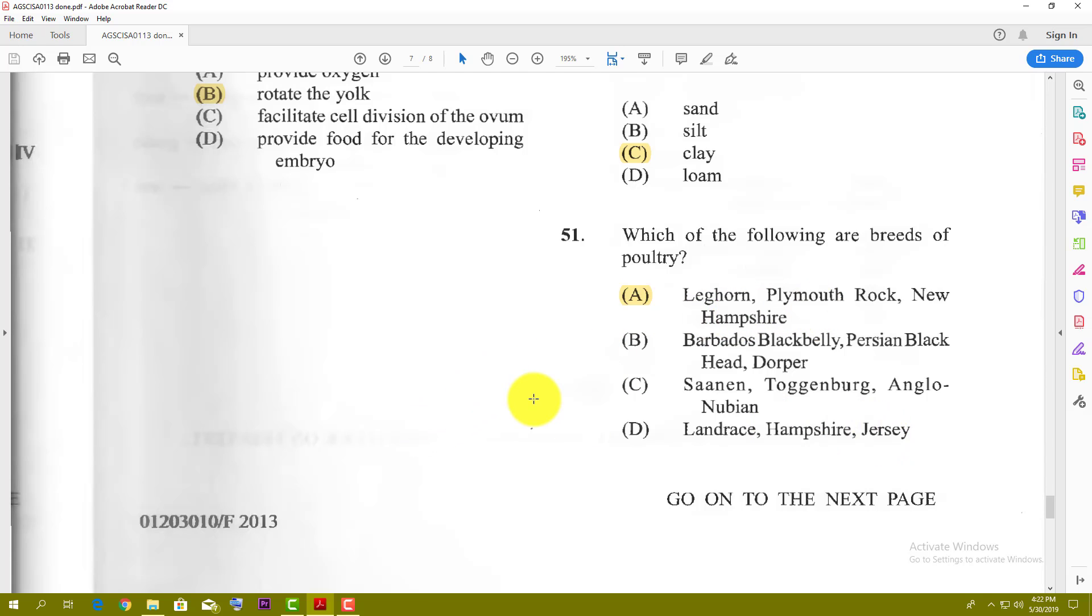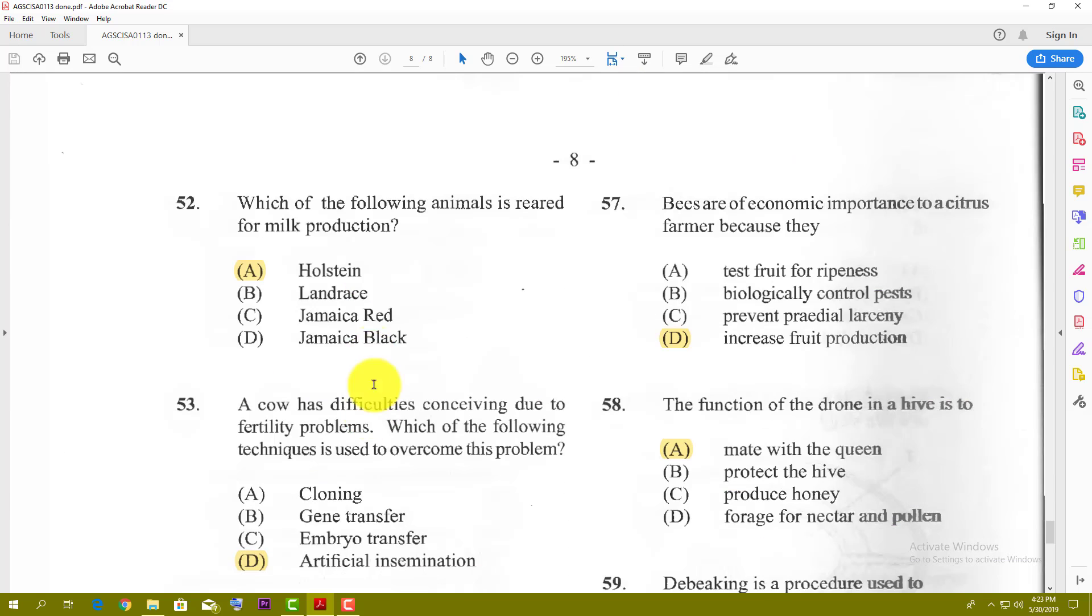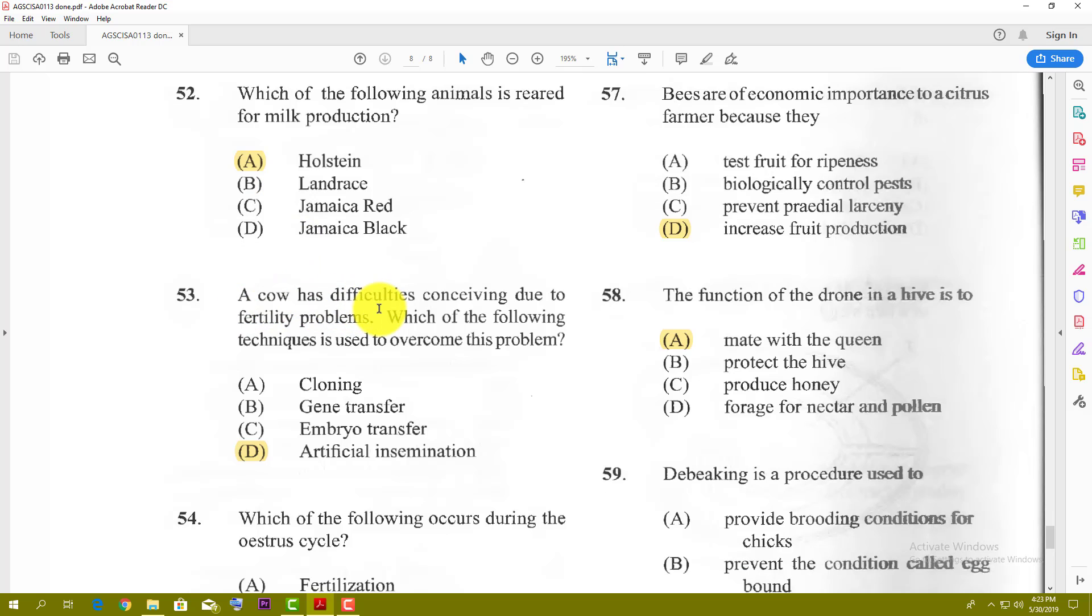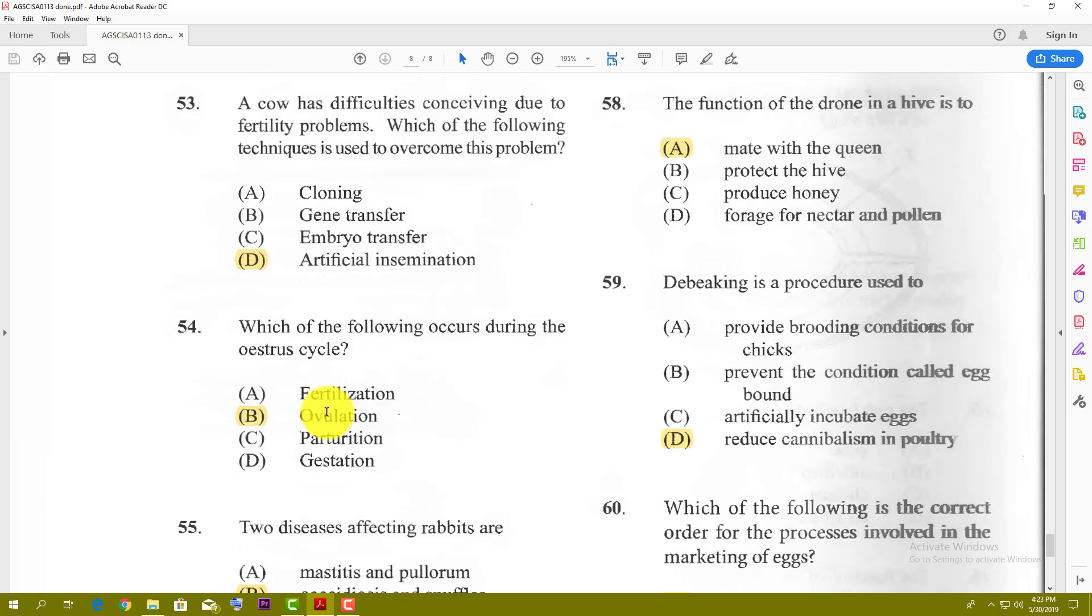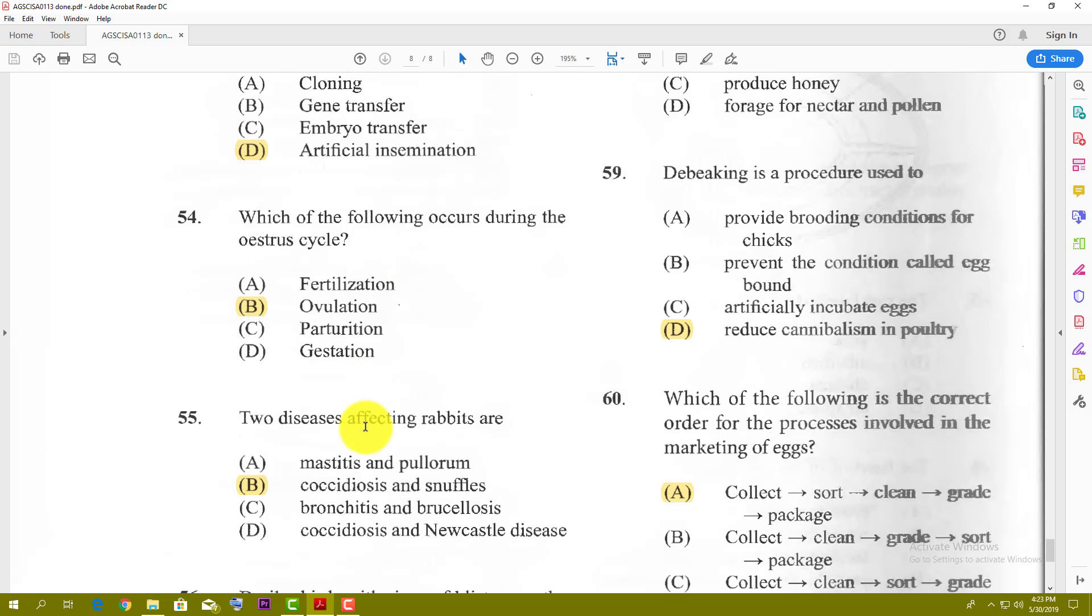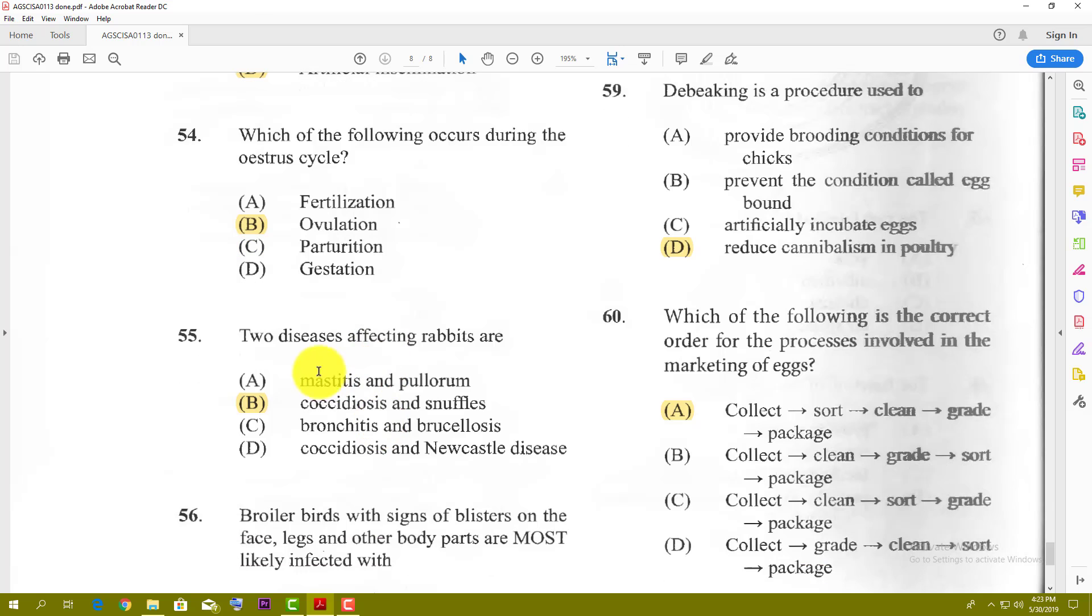Number fifty-two: which of the following animals is reared for milk production? Of course, you have the Holstein. This is a pig, and these are reared for meat, but this is a Holstein, also one of the premier milk cows. Number fifty-three: a cow has difficulty conceiving due to fertility problems. Which of the following techniques is used to overcome this problem? The best answer is artificial insemination, where you actually inject the sperm into the body of the animal. Number fifty-four: which of the following occurs during the estrous cycle? The best answer is ovulation. That is a part of the estrous cycle—ovulation, where the egg is released and everything. Gestation is how long the animal is pregnant. Fertilization is when the male and female come together. So yes, the best answer is ovulation.